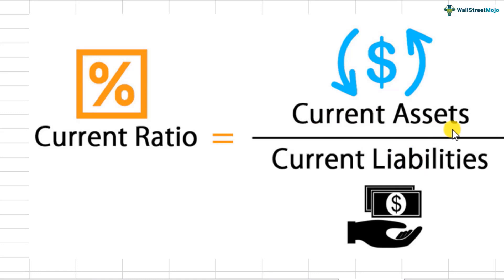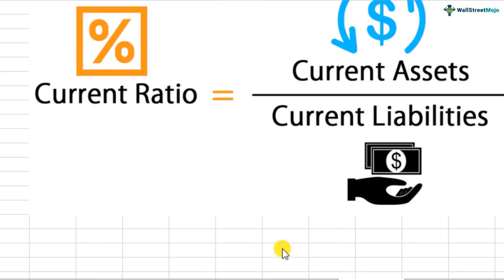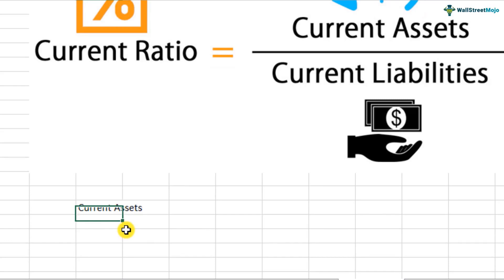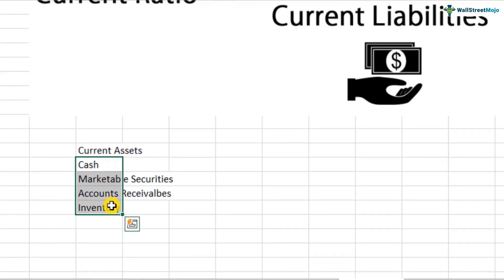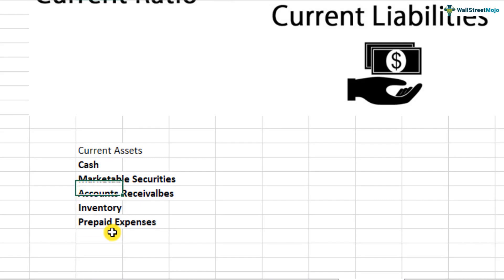Current assets are those assets which can be liquidated — which can be sold — within a year's time into cash. Examples of current assets include cash, marketable securities, accounts receivables, inventory, and prepaid expenses.